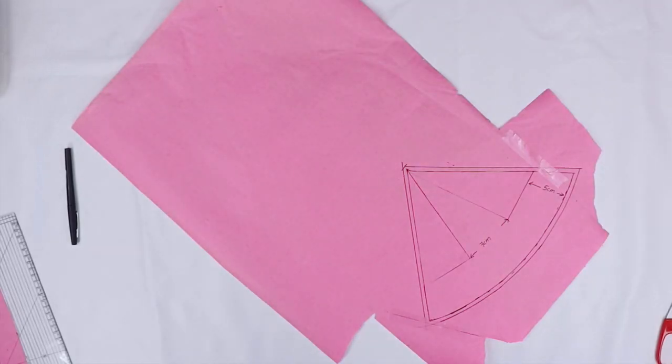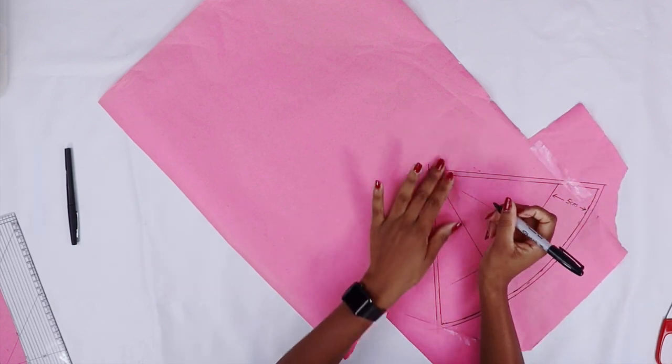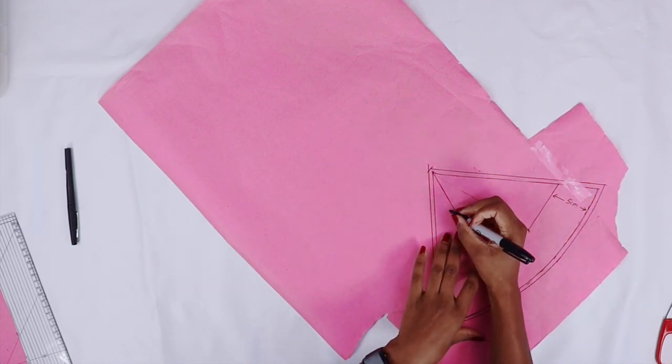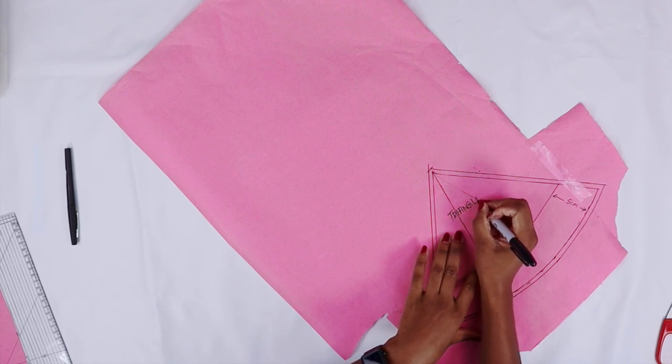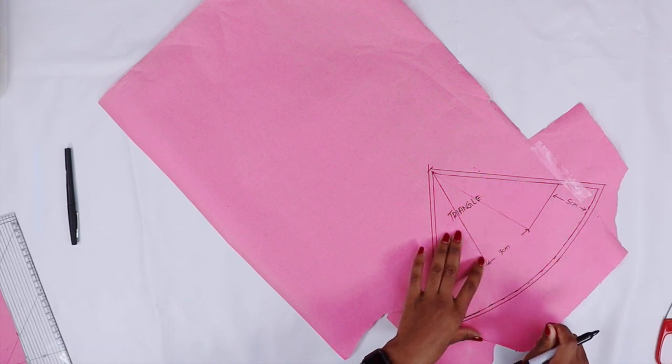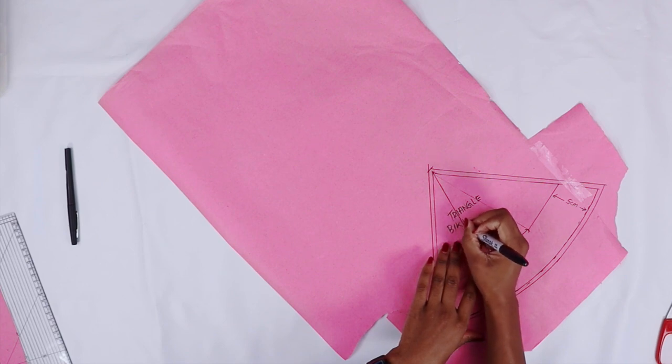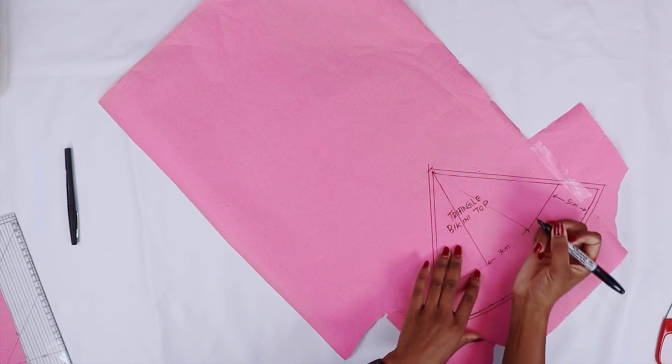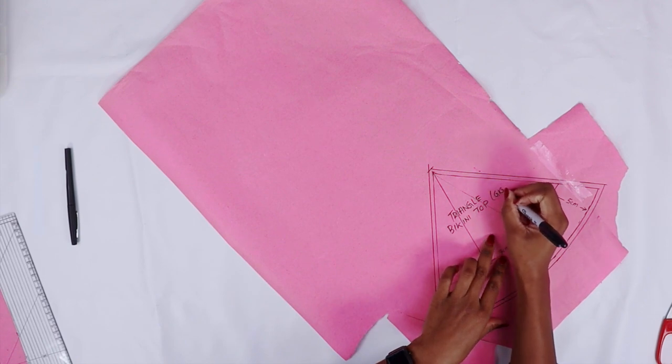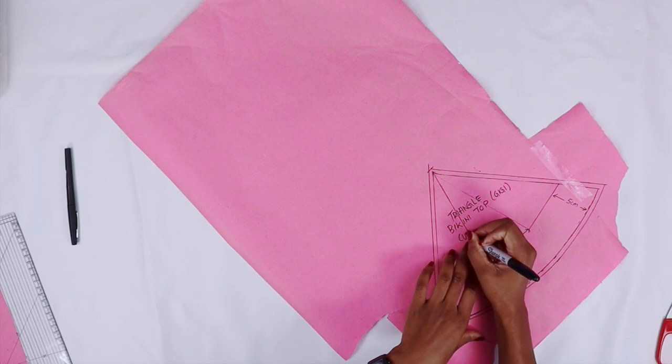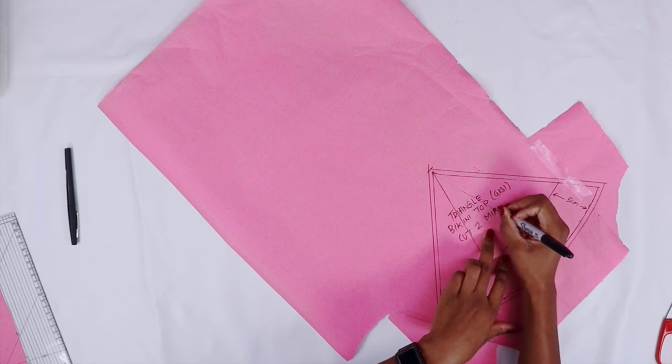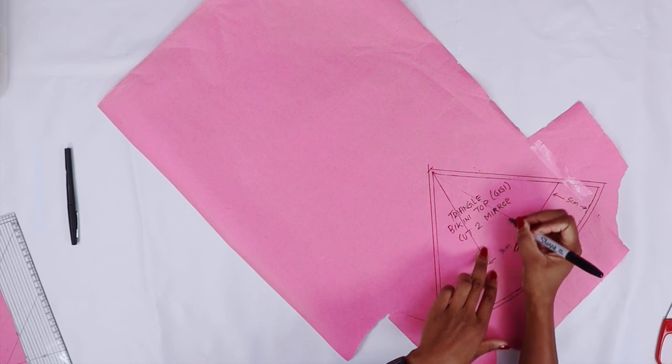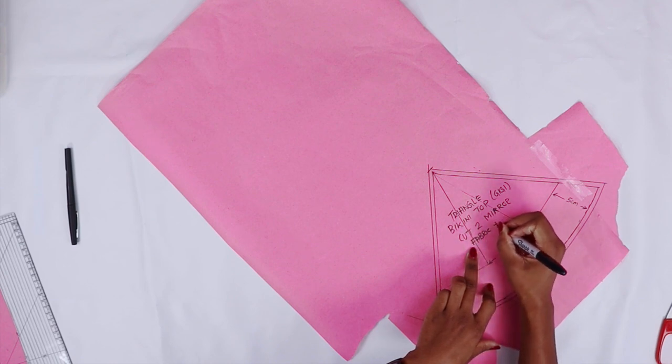So now I'll just write down and label your pattern. This will be triangle bikini top, GG pattern, cut here on fabric and lining.